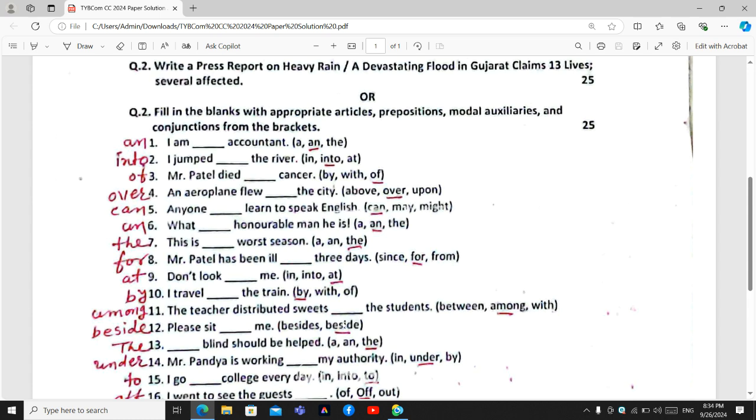Please sit beside me. Not besides me. But right option the right option is beside barjuma. Whereas the word besides means in Gujarati upranth. Here we need only B-E-S-I-D-E. So right option is beside barjuma.